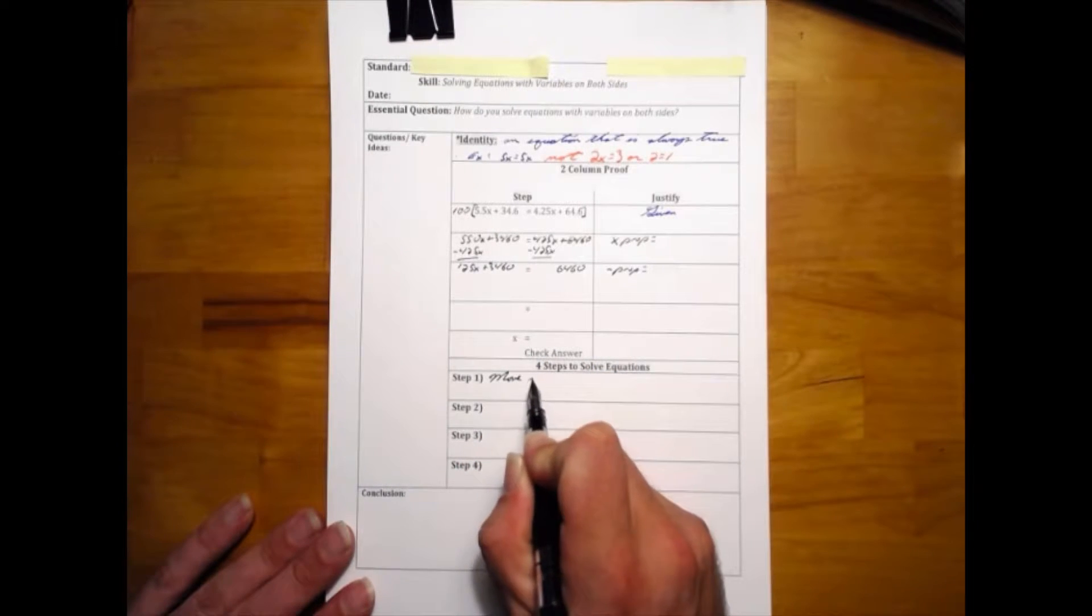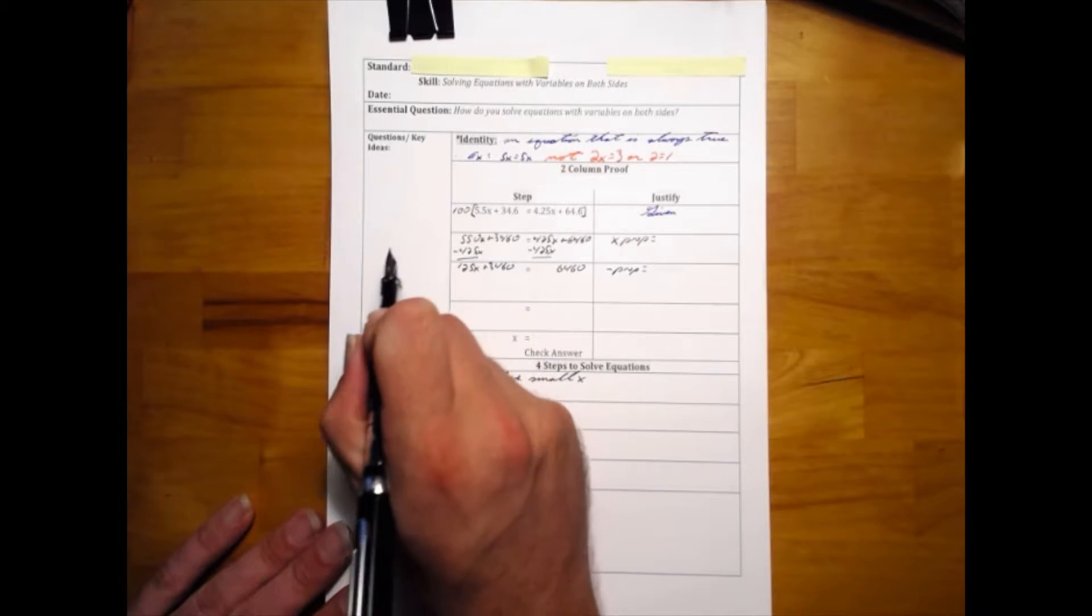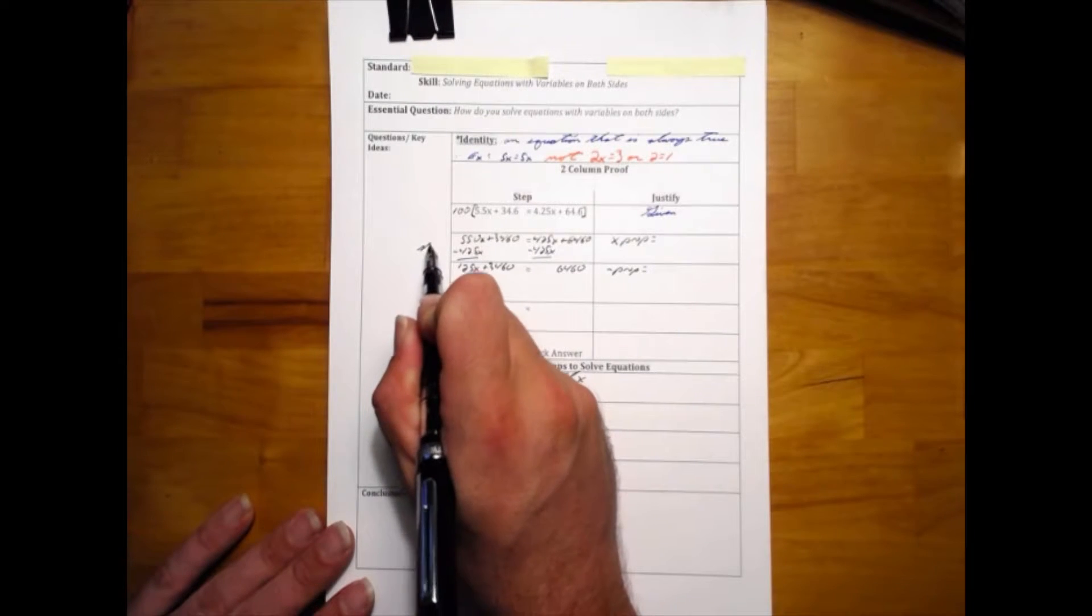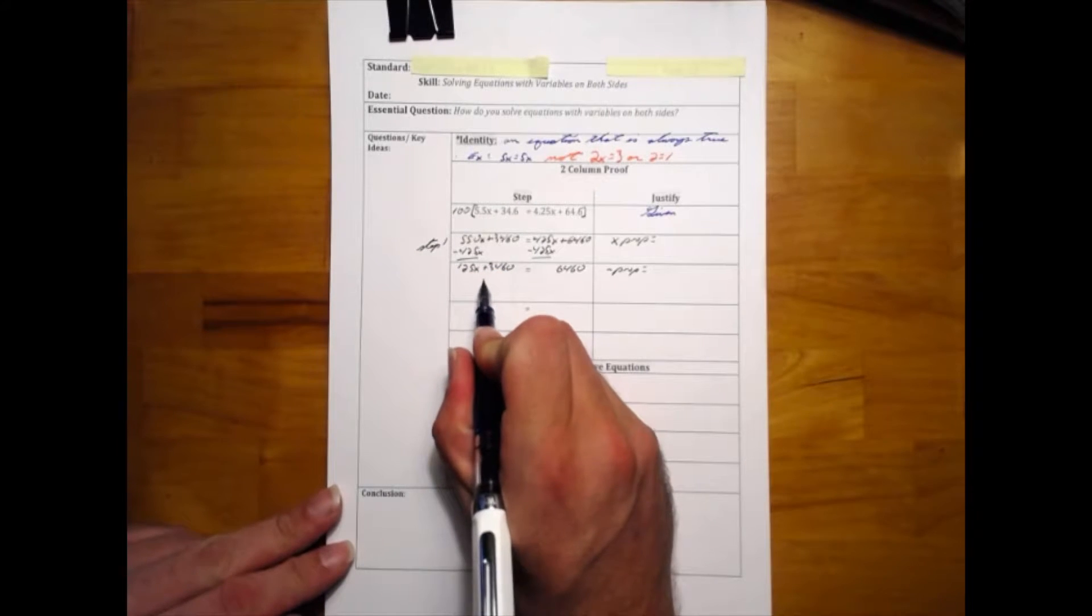This is our first step: we're always going to move the small x away. By moving the small x, we have isolated a variable onto one side. Now we're going to